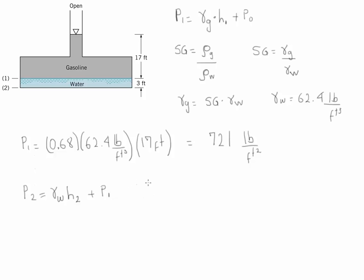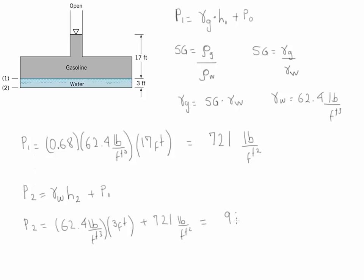Following the same process, P2 is going to be 62.4 pounds per cubic foot times the distance of 3 feet, plus P1 which we calculated as 721 pounds per square foot. Therefore P2 gives us 908 pounds per square foot.